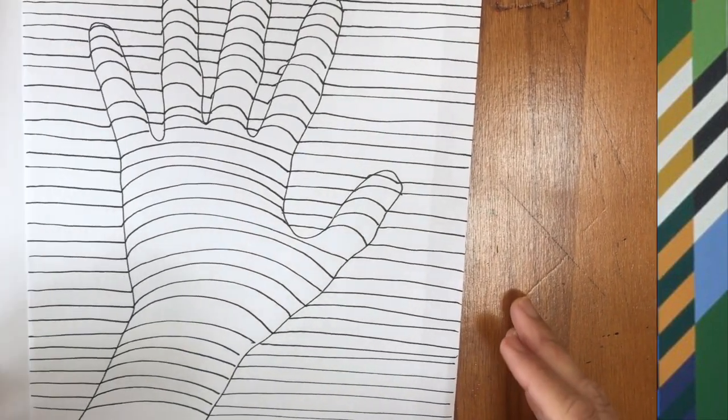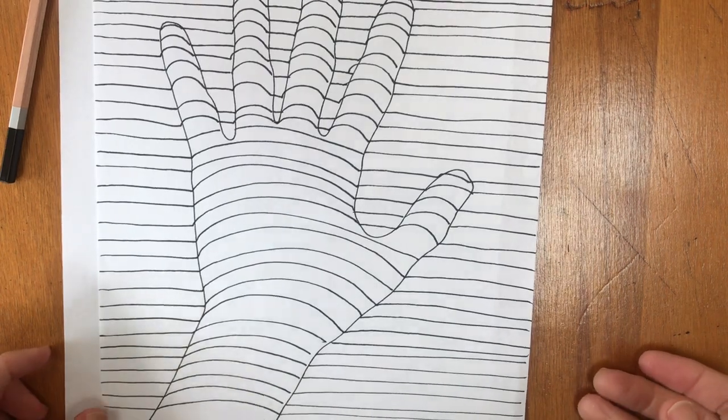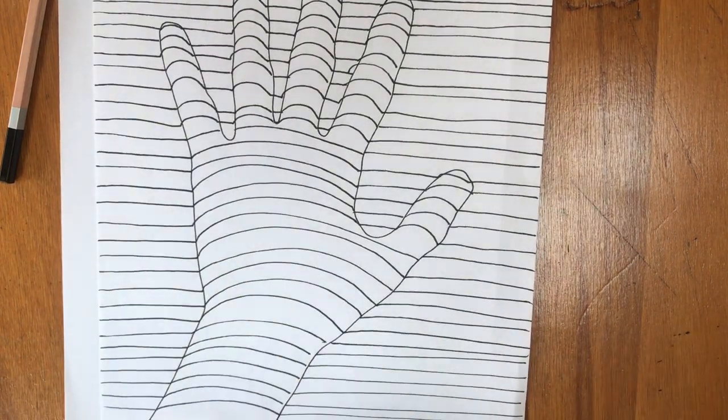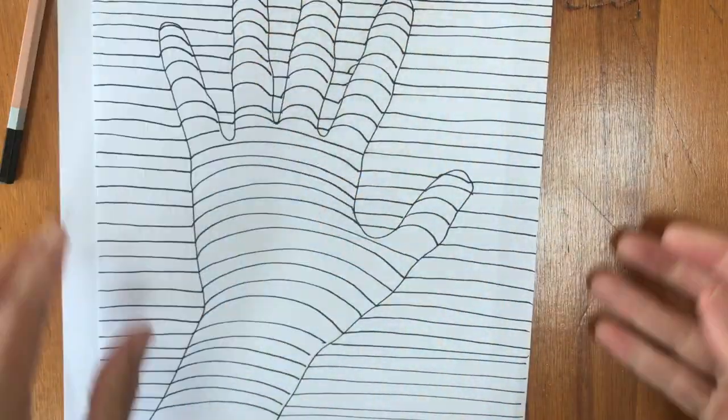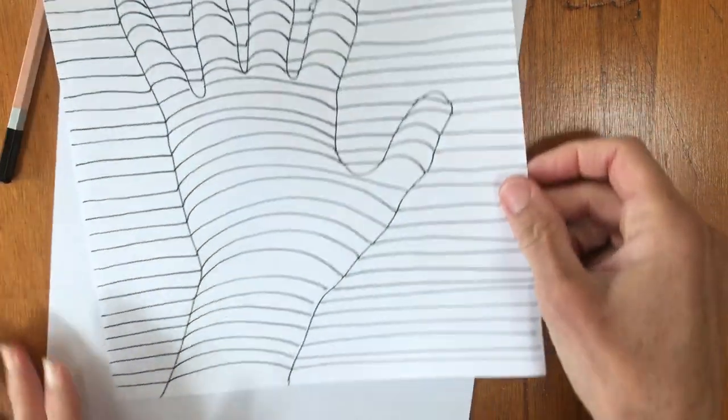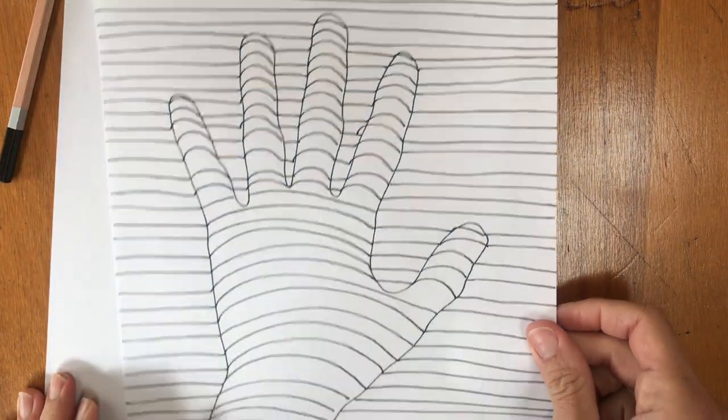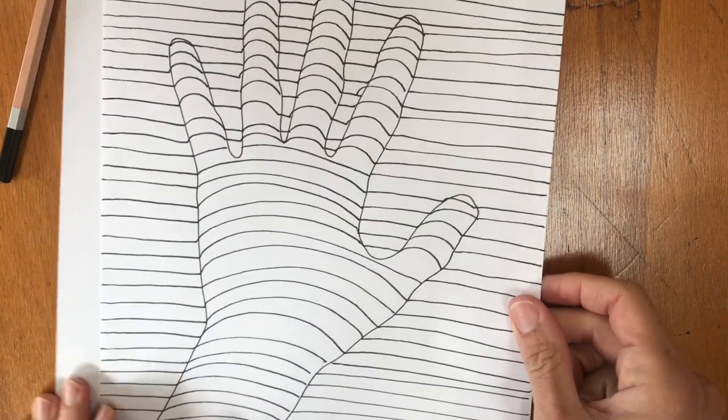So for our op art project inspired by Bridget Riley, we are going to be using our hand. You can see how I used my hand and made it look like it's popping off of the paper, and I'm going to show you guys how to do that.